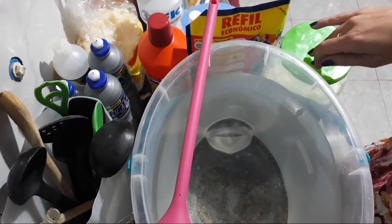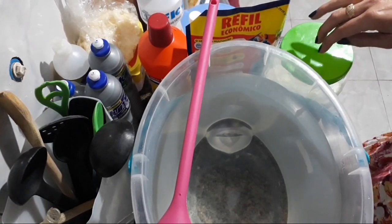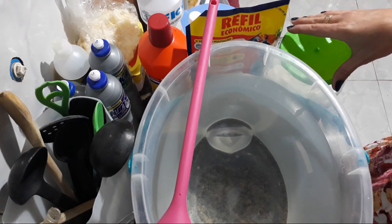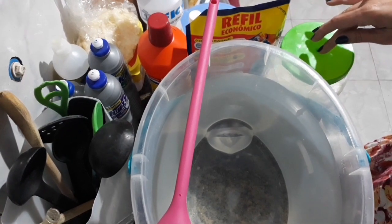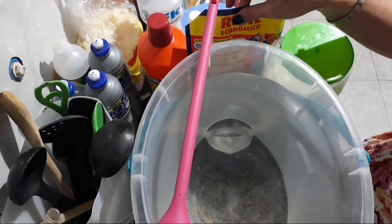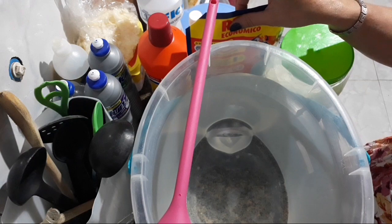Então, para isso, eu vou estar usando barrilha leve, que é um branqueador. A barrilha leve é um alvejante sem cloro, que é apropriado, muito usado para limpar piscinas. Vou estar usando o omo líquido de mercado, que vai substituir o ácido fônico.